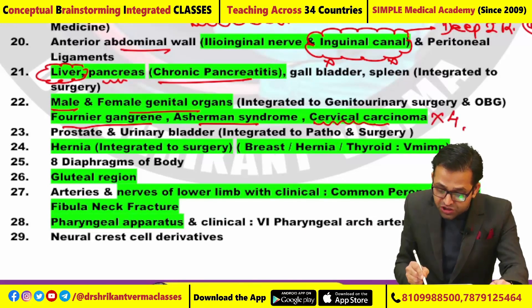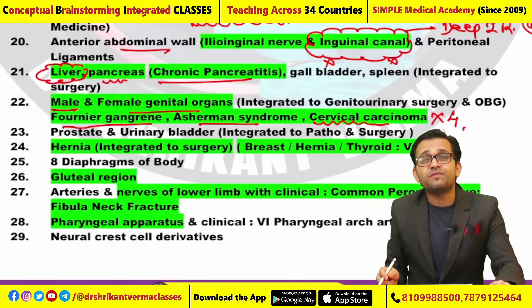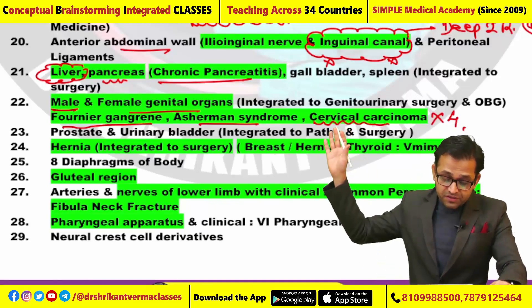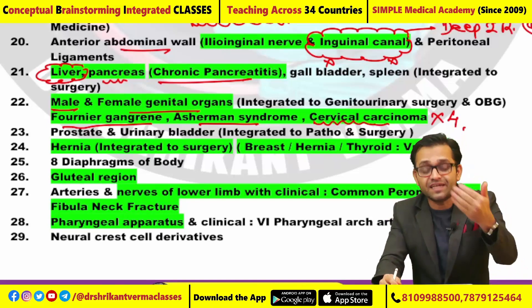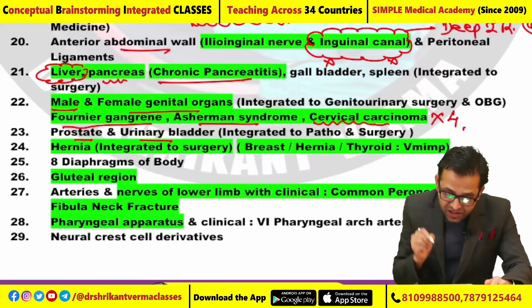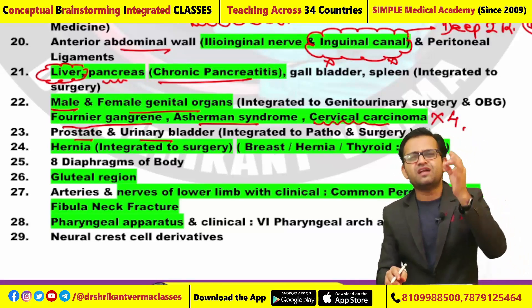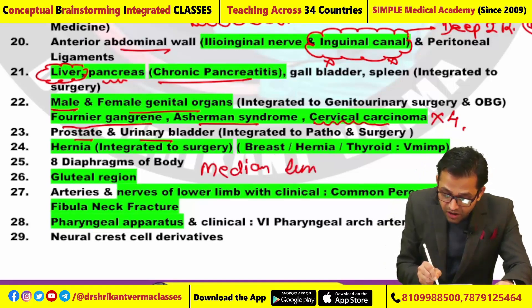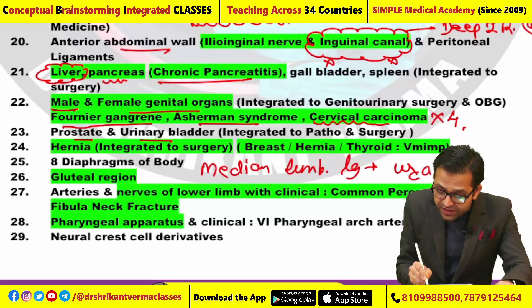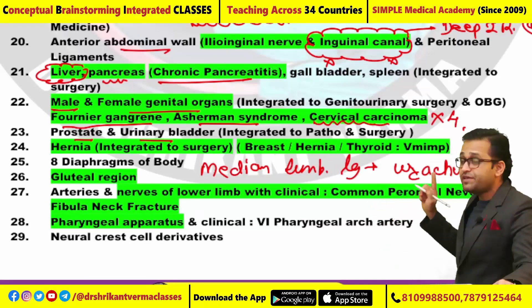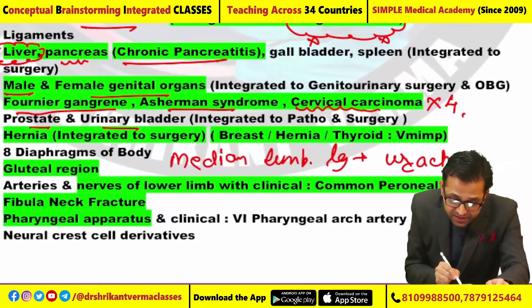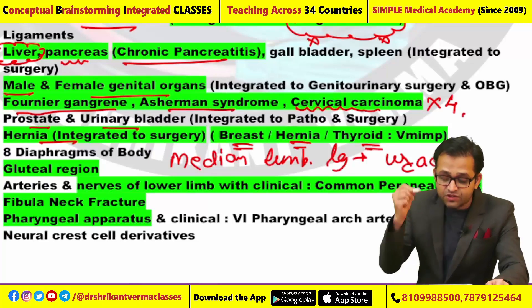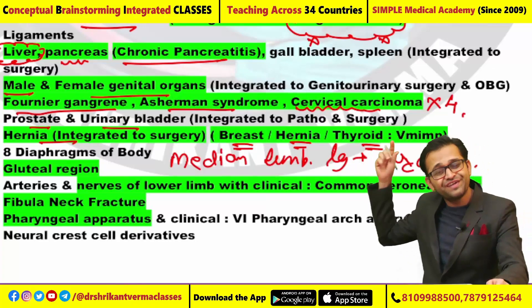For cervical carcinoma, we have to know the basic anatomy and histology for proper solving — questions from OBG, gynae, and surgery. Prostate and urinary bladder integrated with surgery had been asked. Students are saying there was one question regarding the median umbilical ligament which forms the urachus, but the exact question pattern is not confirmed. Hernia, integrated with surgery, had been asked. Breast, hernia, and thyroid are very important — I told you in the 33 must-do topics.